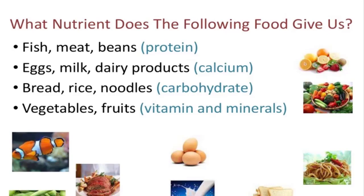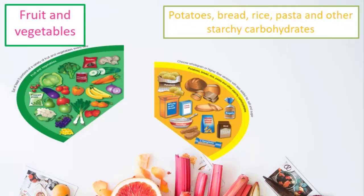These are different types of nutrients that we get from different food items: protein, calcium, carbohydrate, vitamins, and minerals. They are all good for your body. Protein is your building block, calcium makes your bones strong, carbohydrate is a quick source of energy, and vitamins and minerals fight off diseases.